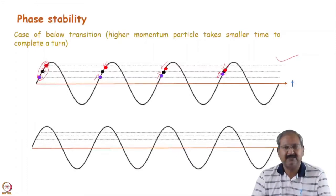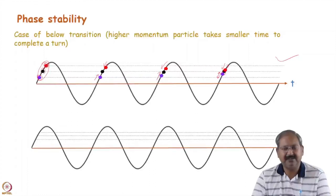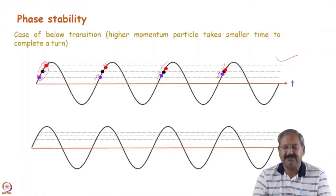As the quadrupole focuses the beam and excites betatron oscillations, similarly the RF cavity focuses in the longitudinal direction and excites a kind of oscillation known as synchrotron oscillations.